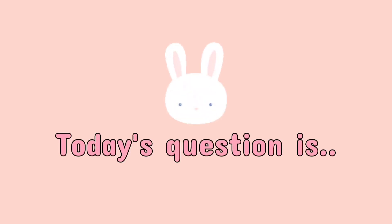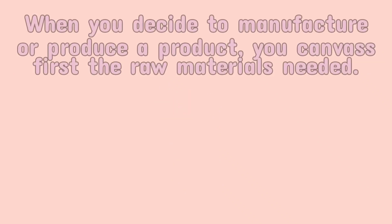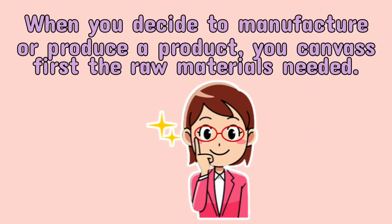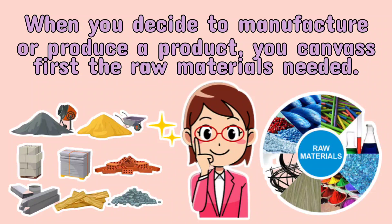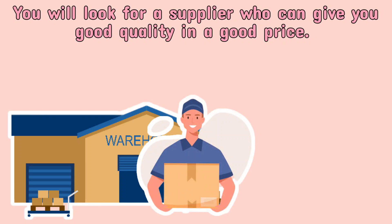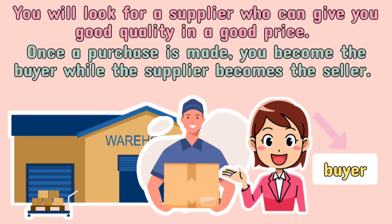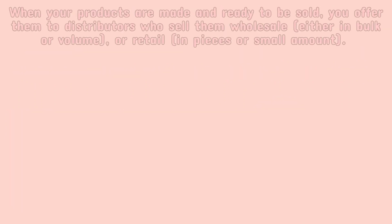Today's question is how to identify buyers and sellers. When you decide to manufacture or produce a product, you can invest first in the raw materials needed. You will look for a supplier who can give you good quality at a good price. Once a purchase is made, you become the buyer while the supplier becomes the seller.